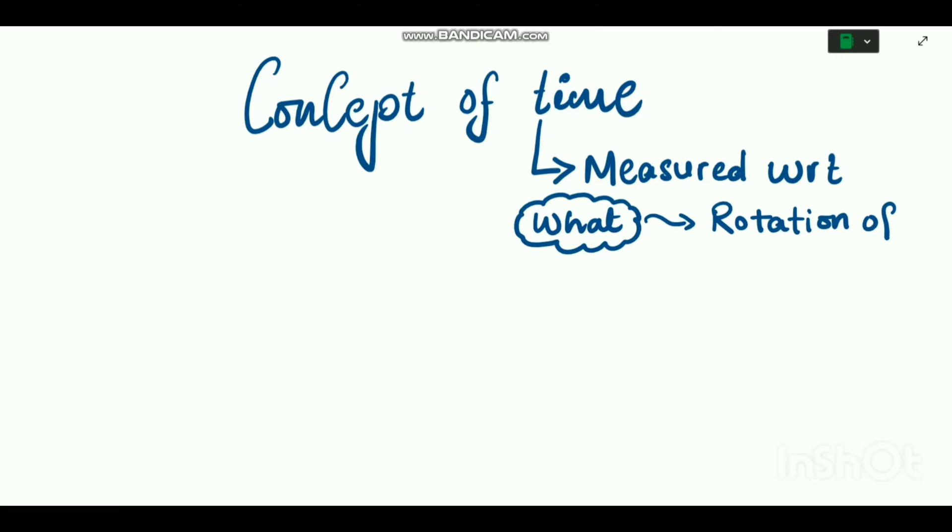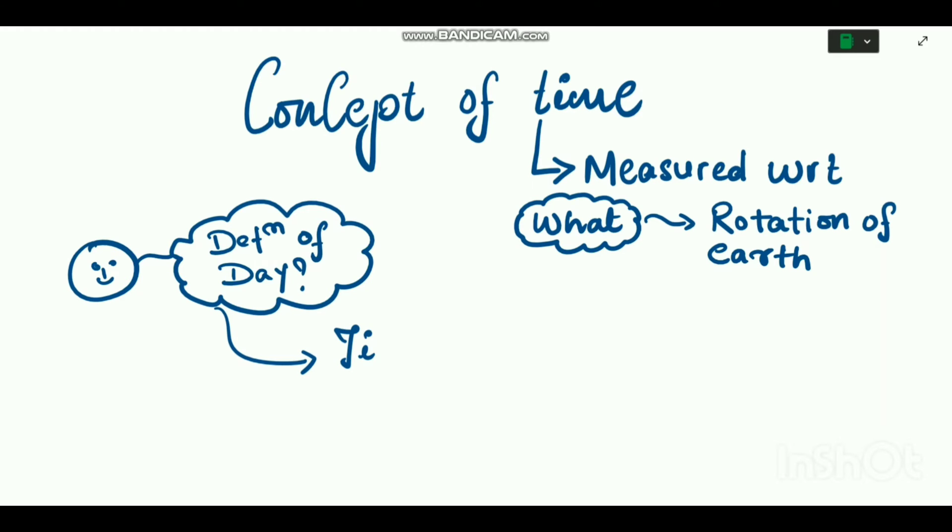Have you ever wondered how we can define a day? So a day can be defined as the time taken by earth to complete one rotation on its axis with respect to a celestial body.